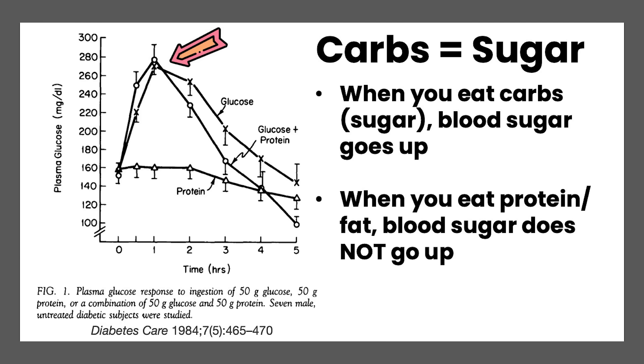We've known this for many years. If you give somebody 50 grams of glucose, their blood glucose immediately goes up — this was shown in 1984. When you eat rapidly digested starches such as fine flour, a very pure carbohydrate, it's like eating 50 grams of pure glucose and your blood glucose will go up. When you eat proteins, your blood glucose doesn't go anywhere. If you eat amino acids or fatty acids, your blood glucose is not going to go up because you didn't eat any glucose.